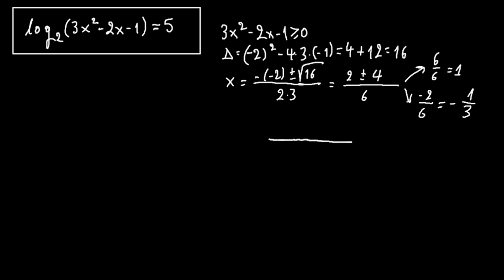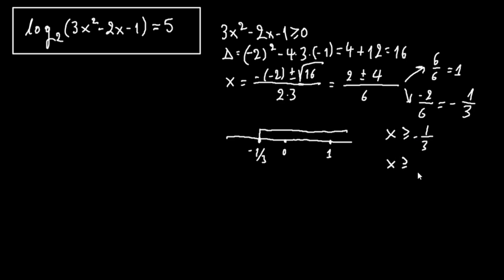If we draw this on a number line, we have 1 and minus 1 over 3. Let's say this here is 0, and 1 is somewhere here. From the first, a solution must be x greater or equal to minus 1 over 3. From the second, x greater or equal to 1. So x must be greater or equal to 1 for our solutions to be accepted.